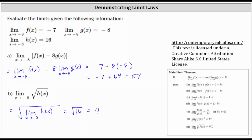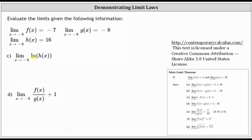Let's take a look at two more examples. Here we have the limit of the natural log of h of x as x approaches negative eight. This is equal to the natural log of the limit of h of x as x approaches negative eight. Again, we know the limit of h of x as x approaches negative eight is 16, giving us natural log 16 as the exact value of the limit.